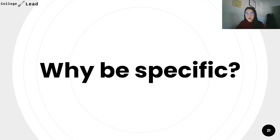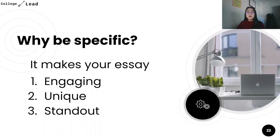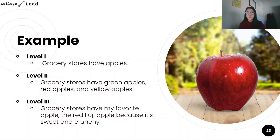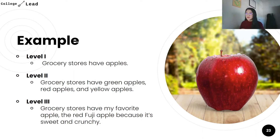Why do we want to be specific? Let's first understand our goal in this whole edit. We want to be specific because it makes your essay engaging, unique, and stand out. I like to think of being specific in three different levels. The first level is not at all specific. The second level is somewhat specific. And the third level is very specific. Here's an example using apples in a grocery store. Level one - not at all specific - is that grocery stores have apples. Level two is grocery stores have green apples, red apples, and yellow apples. Level three is grocery stores have my favorite apple, the red Fuji apple, because it's sweet and crunchy.